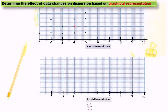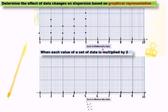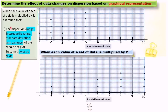Now let us look at the next dot plot graph. This dot plot graph shows the score of students in a mathematics quiz. When each value of a set of data is multiplied by 2, it is found that the dispersion, range, interquartile range, standard deviation, and variance of the whole dot plot become twice as wide.